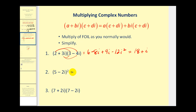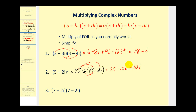On number two, there are no shortcuts. We have to write this out as five minus two i times five minus two i. Multiplying as we normally would, we'll have twenty-five minus ten i minus ten i again. And then negative two i times negative two i will be positive four i squared. Since i squared is equal to negative one, four times negative one is negative four. Combining negative four with twenty-five, we'll have twenty-one. Combining negative ten i minus ten i will be minus twenty i.